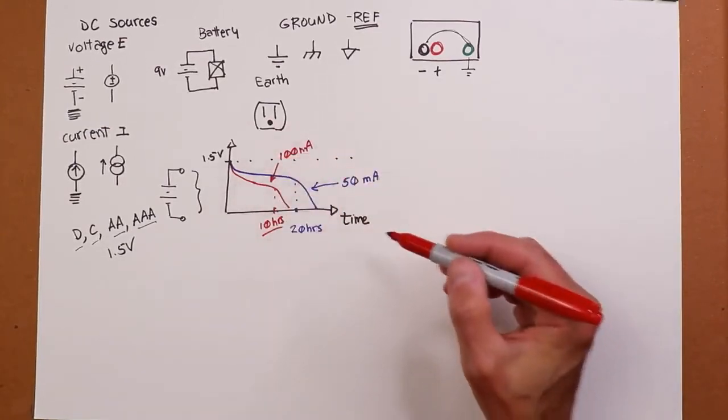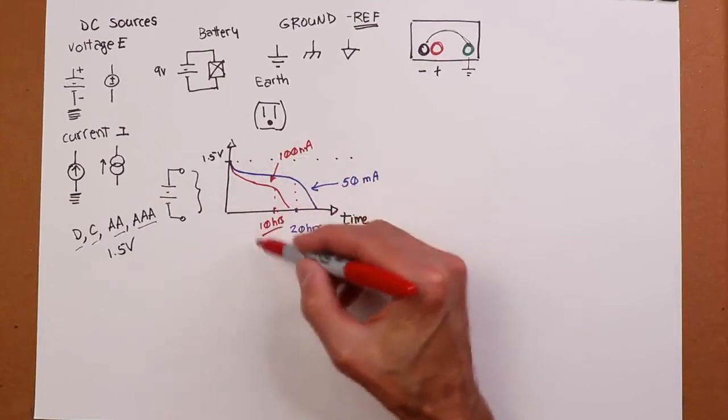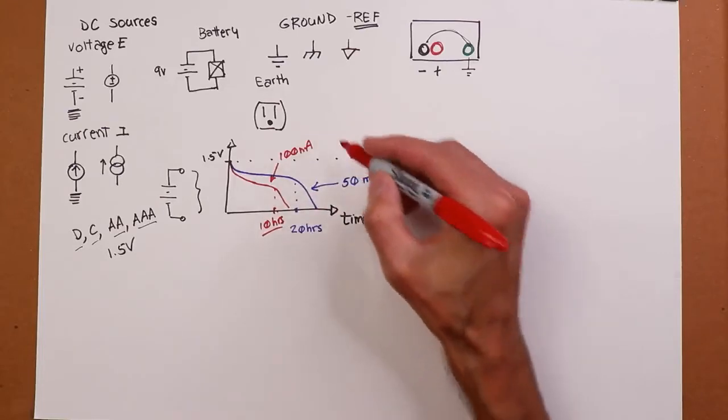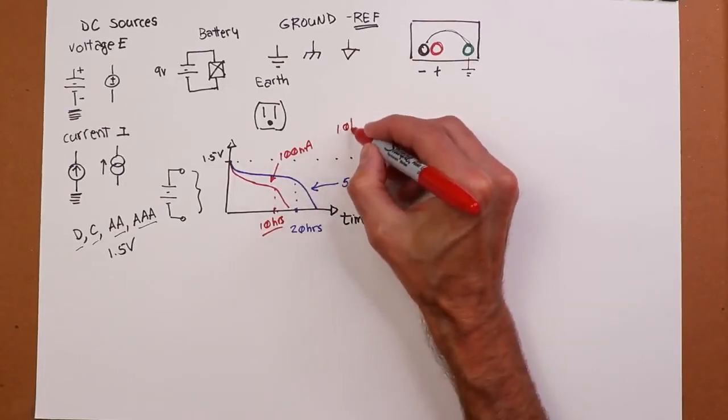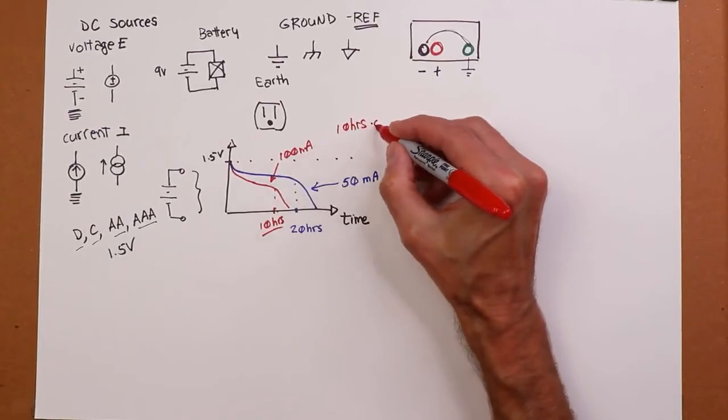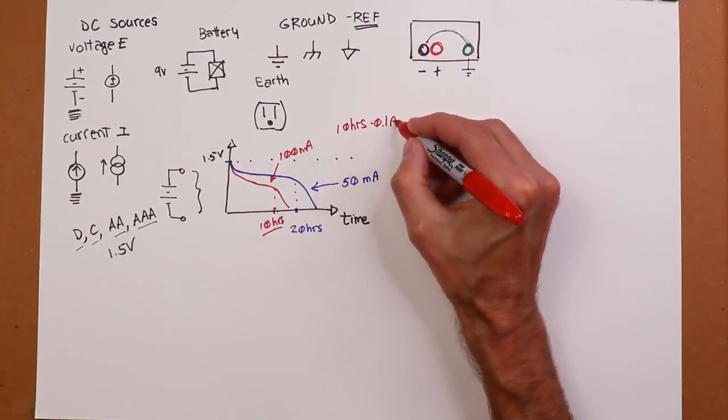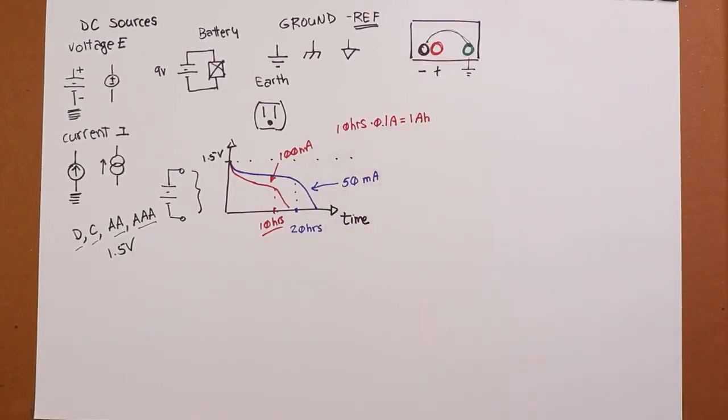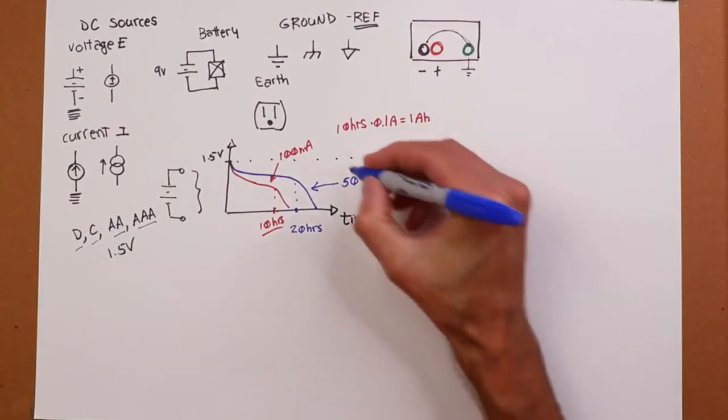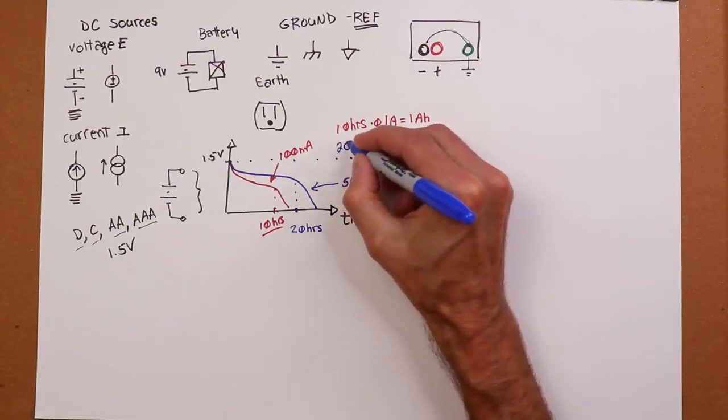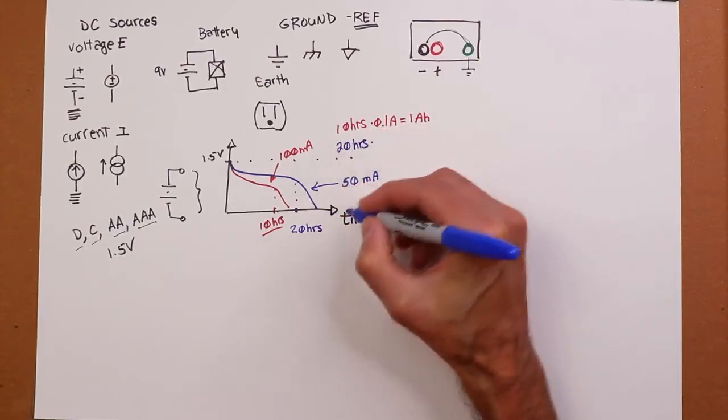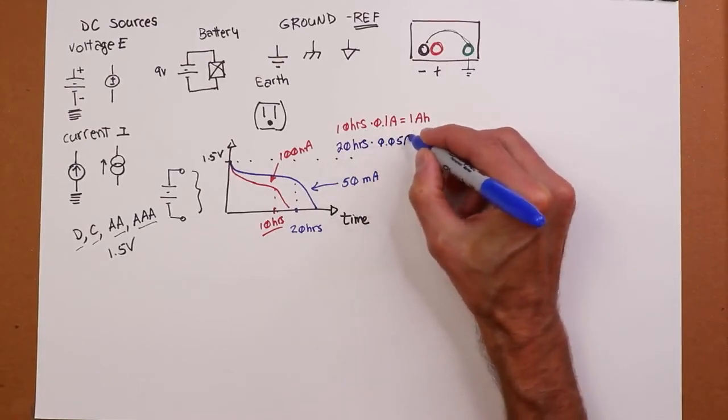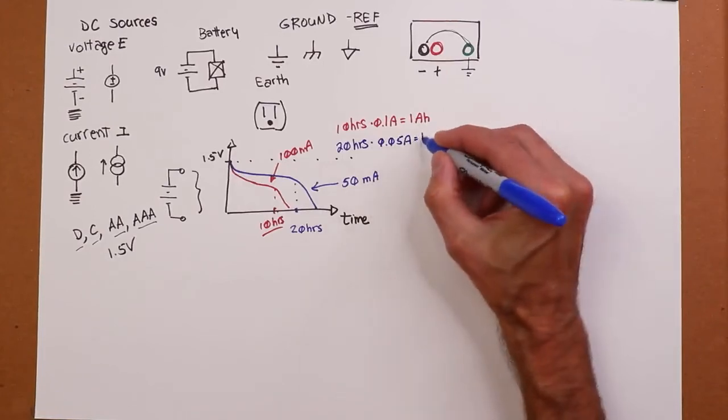Now, if you multiply these things together, if you multiply the amount of time that you have and the current, you get a value. In the red case, we get 10 hours times 100 milliamps or 0.1 amps, if you prefer. So that works out to 1 amp hour. In the case of our blue device over here, it's 20 hours times 50 milliamps or 0.05 amps. And that will also equal out to 1 amp hour.